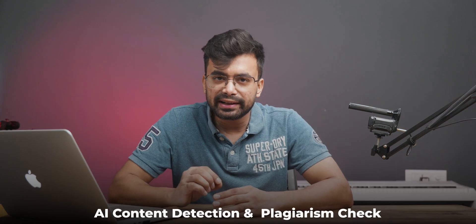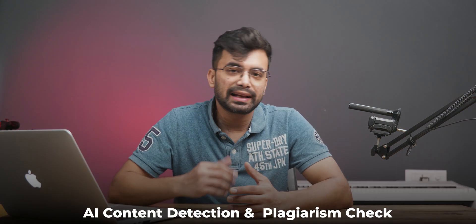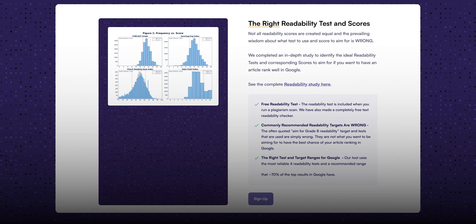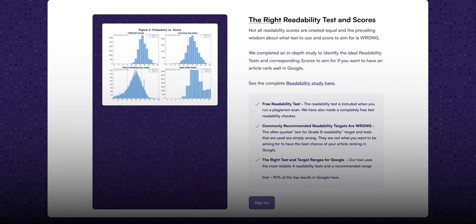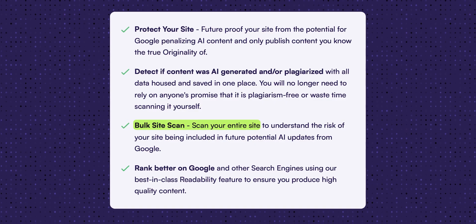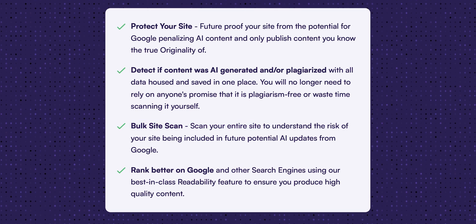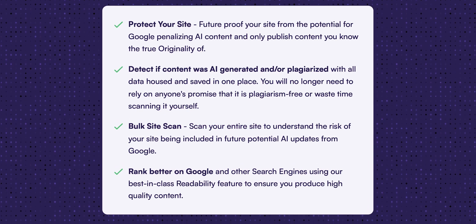It can not only detect AI-generated content but also has other perks like plagiarism check, which is very important — I usually use Grammarly for this. It also gives a readability score which helps with better Google ranking. It can scan your full site to detect if any AI-generated content is being posted, and much more. Talking about the accuracy of the app, it is the most accurate one I have yet found.